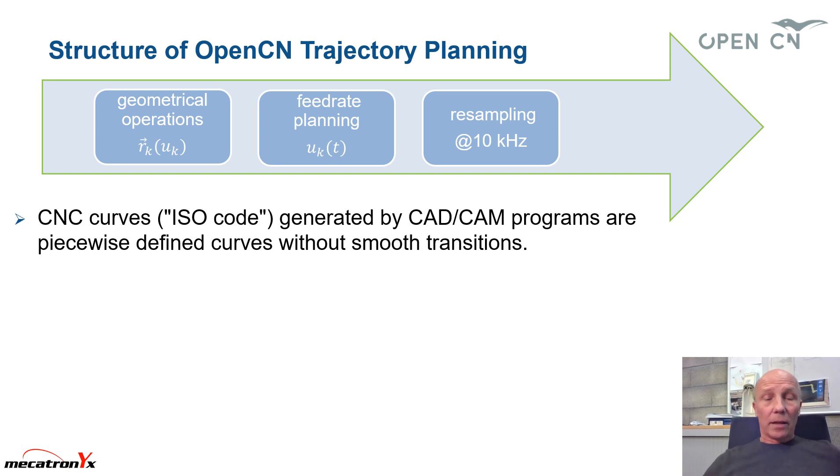Let us start with the structure of the trajectory planning. We have at the left here the ISO code coming in, the interpreter.